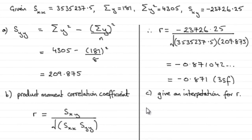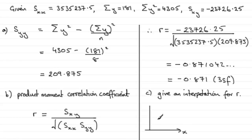In part c we're asked to give an interpretation for the coefficient we just worked out — the product moment correlation coefficient. Going back to what it represents from the point of view of a scatter diagram: if we had y plotted against x, we'd find a scatter diagram with points that are negatively linearly correlated, something like this. It's not a perfect negative linear correlation, but the points would be fairly close to a straight line.